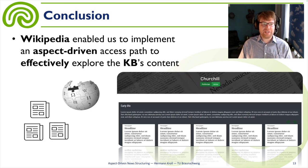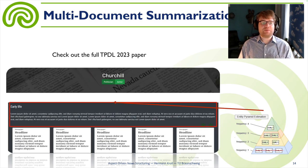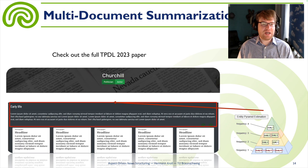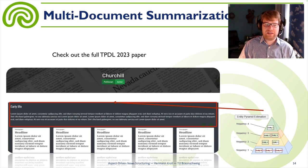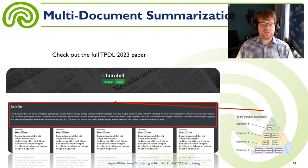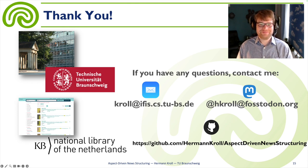In conclusion, Wikipedia data enabled us to implement an aspect-driven access path to effectively explore the KB's content, and the system worked with sufficient quality. If you want to know more, especially about the multi-document summarization part, you can look into our TPDL paper. As a short remark, the multi-document summarization part was not very useful, but the structuring and classifying of articles into different aspects and roles worked quite well. Thank you for your attention — if you have any questions, just ask them.